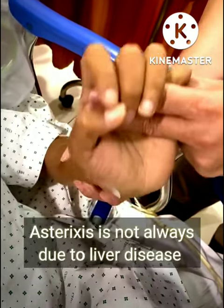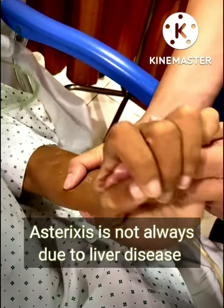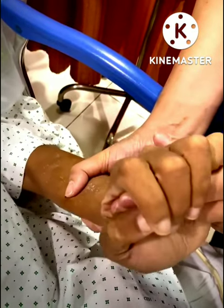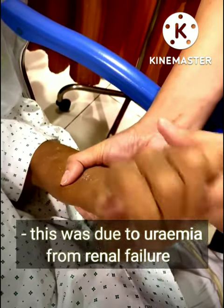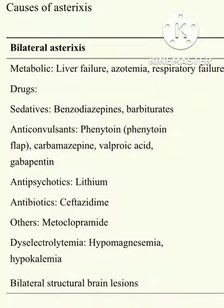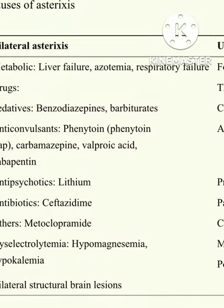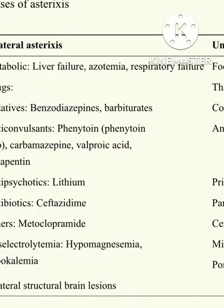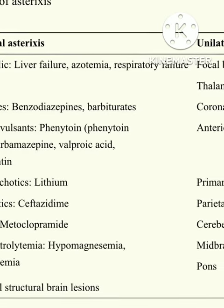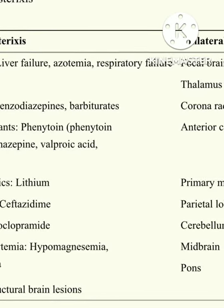Asterixis can occur in liver disease, but it's not always due to liver disease. In this case it was due to renal failure and uremia. Bilateral asterixis is caused by metabolic conditions such as liver failure, azotemia, and respiratory failure, as well as drugs like benzodiazepines and barbiturates.